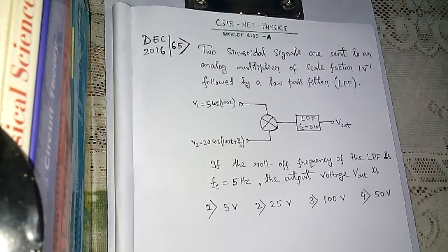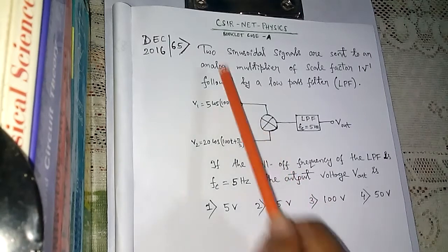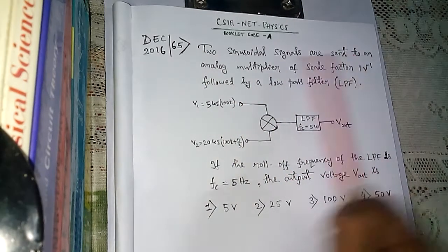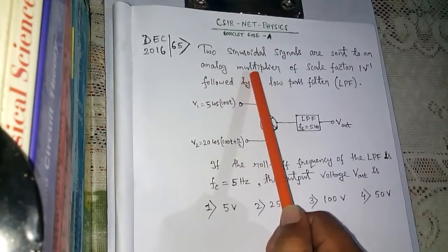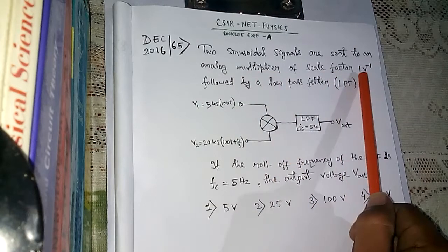Hello friends, this is Vidhan. Welcome to my channel. Today we have a problem from December 2016, question number 65. It's from booklet code A, from electronics. Two sinusoidal signals are sent to an analog multiplier of scale factor 1 per volt, followed by a low-pass filter.